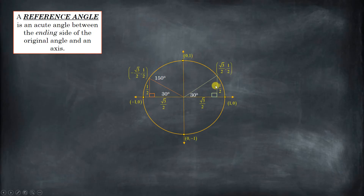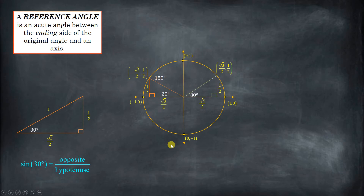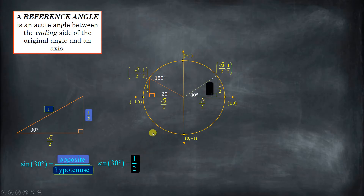Now let's look at a 30-degree angle — that's going to end up in the first quadrant. Do you see how these coordinates are almost the same as the 150-degree angle? The only thing that's different is that x is positive, and both y values are positive because they're in the first and second quadrants, so they have exactly the same height. There's a pattern there that we're going to see very clearly in a little bit. The sine of 30 degrees is opposite over hypotenuse: that's 1/2 divided by 1, which is 1/2. And you'll notice that the y-coordinate for a 30-degree rotation is also 1/2.